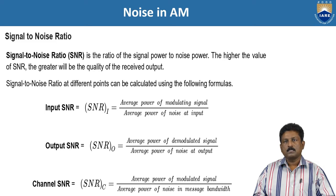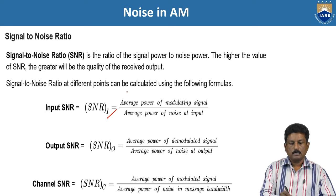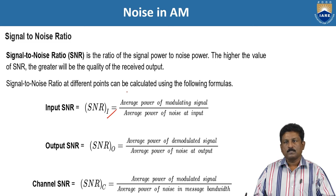We can calculate the signal-to-noise ratio at different points. The first one is the input SNR. SNR(I), where I stands for input — it is the average power of the modulating signal to the average power of the noise at the input side.